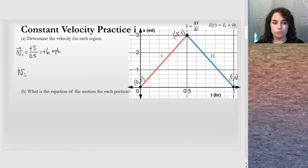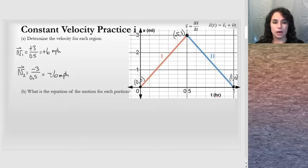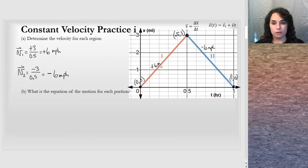I can do the same for the second region, V2. When I look at V2, the final is 0 and the initial is 3. So when I go final minus initial, I get 0 minus 3. I move backwards 3 miles in half an hour, and so my velocity becomes negative 6 miles per hour. It's the same speed, and you may notice that about the slope: one has a positive slope and the other has a negative slope, and they are constant throughout.